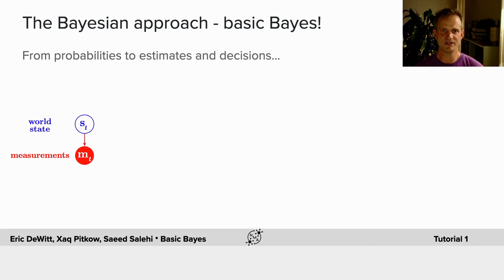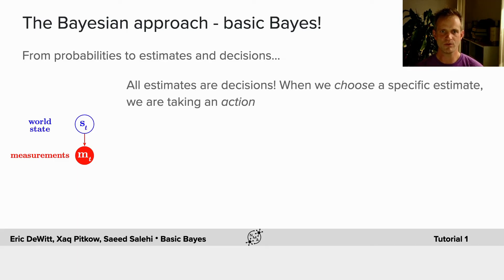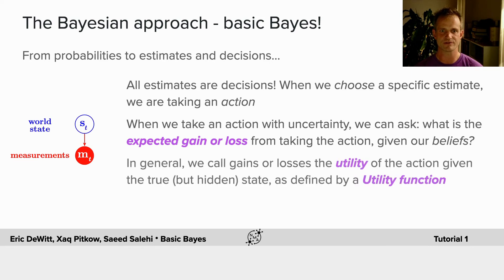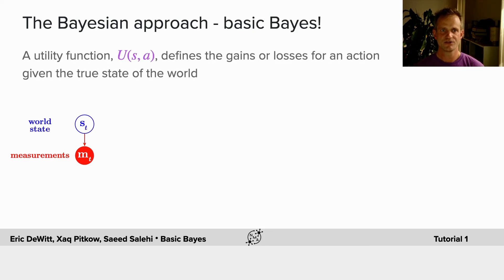So how do we go from probabilities to estimates and decisions? If I wanted to make an estimate about the state of the world, I'm making a decision. When we choose a specific estimate, we're taking an action. And when we take an action under uncertainty, we can ask what is our expected gain or loss from taking the action given our beliefs. In general, we call the gains or losses the utility of the action given the true but hidden state of the world, and this is defined by a utility function. For estimates, we often call this a loss function. A utility function is defined with reference to the true hidden state of the world and an action or an estimate.